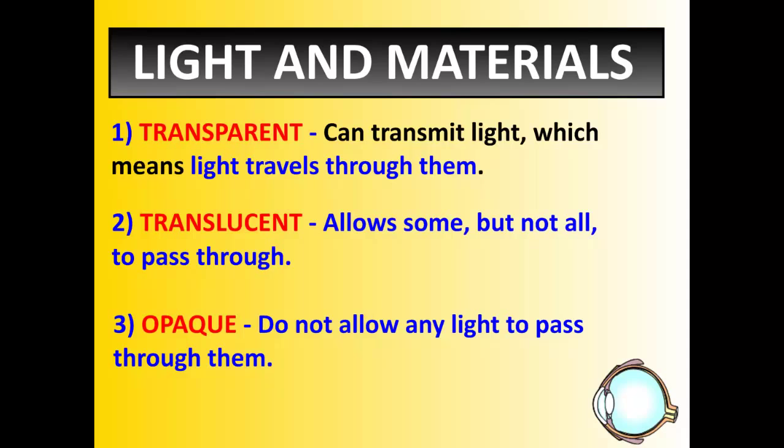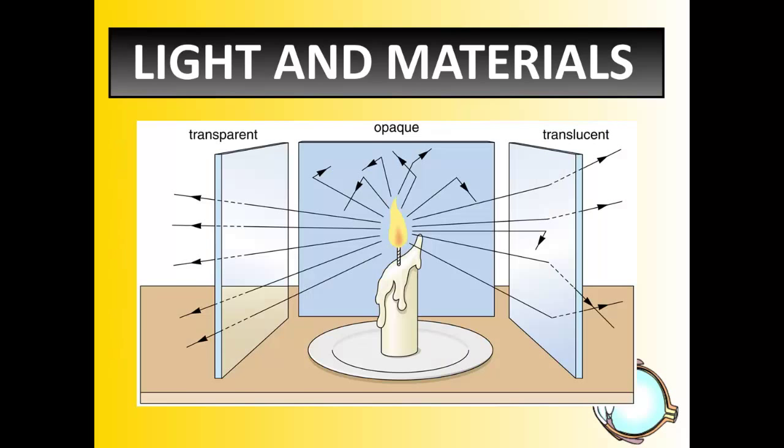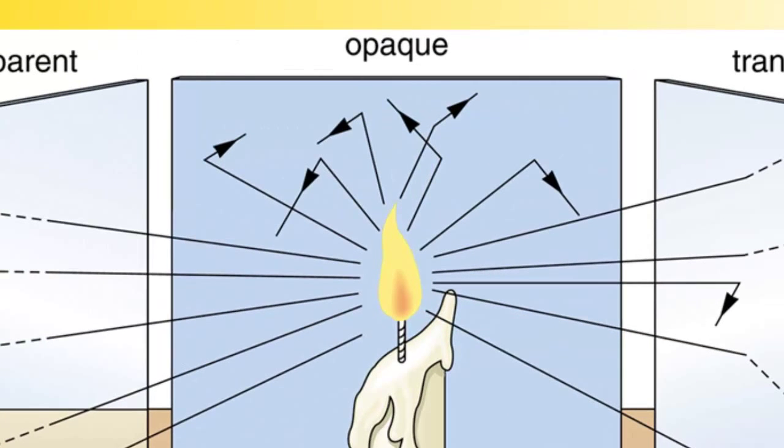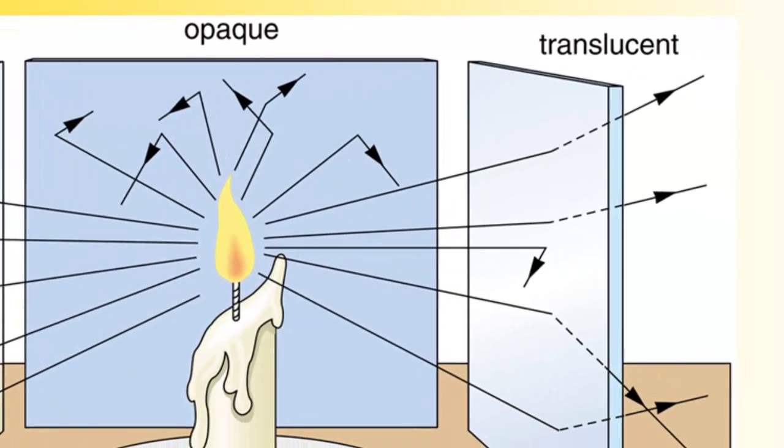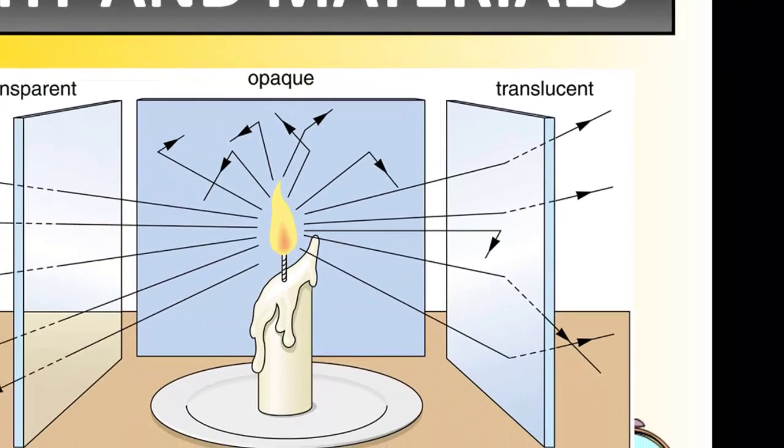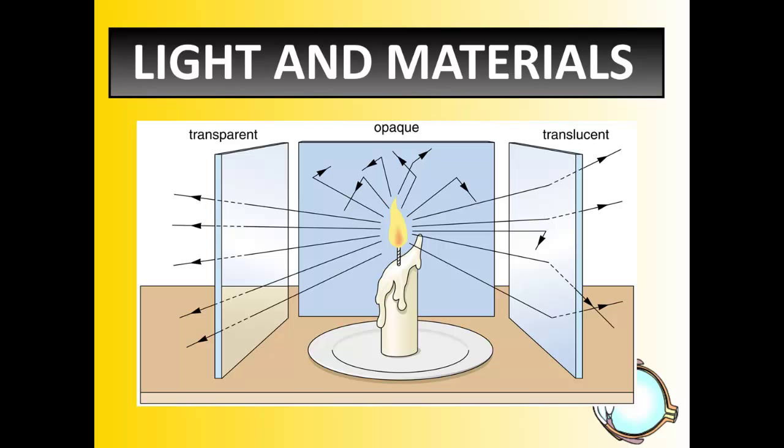Transparent, translucent, and opaque. And we can demonstrate these three through this simple diagram. Notice the transparent one on the left, everything passes through. Opaque, everything bounces back. And translucent on the right, some stuff bounces back, some stuff bounces through. So again, just a quick review of what these three materials are.